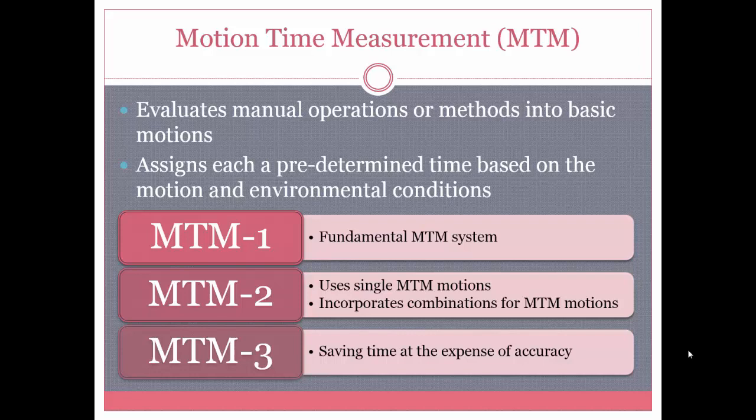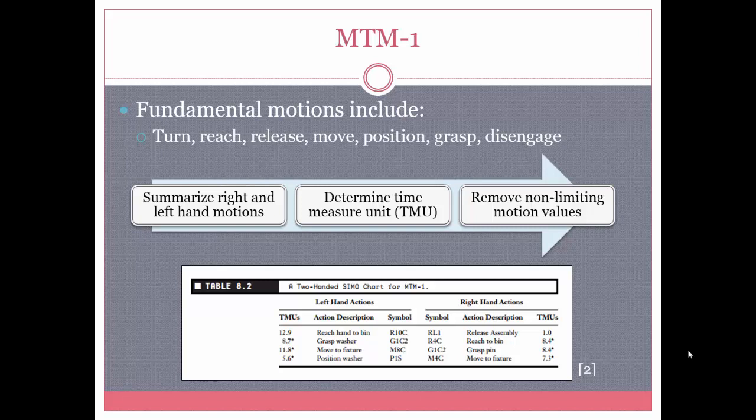MTM1 is the most basic of all the methods, and it uses a thing called therbligs, which are basic fundamental motions. A few examples listed here include turn, reach, release, move, position, grasp, and disengage — though this is just a small list of the many therbligs. There are three main steps involved: first you summarize the right and left hand motions, then you determine the time measure unit (TMU), and finally you remove non-limiting motion values.